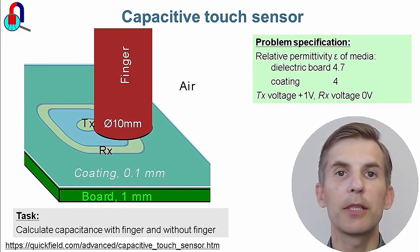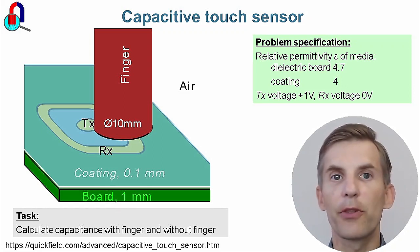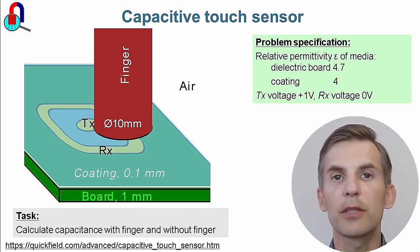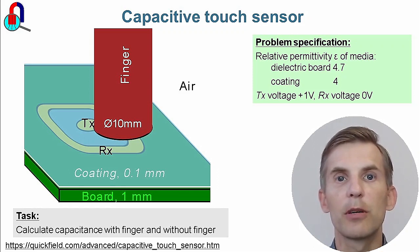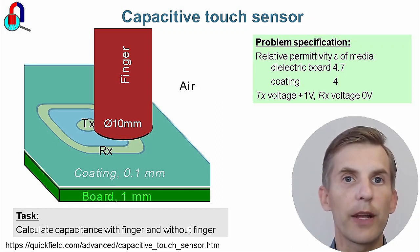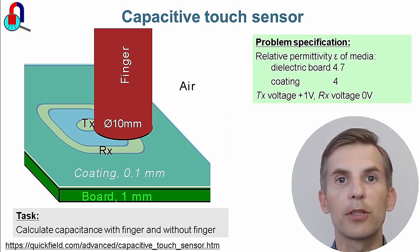A capacitive touch sensor consists of two electrodes: a transmitting and a receiving one. Electrodes are placed on a dielectric board. The presence of a human finger in the vicinity of the electrodes affects the capacitance between them. Some studies reveal that human tissue dielectric permittivity could be as much as 10,000, compared to the dielectric permittivity of air which is one. A plus one and minus one volt electric potential is applied to the electrodes, and the stored electric field energy is measured. The capacitance value is double the stored electric field energy divided by the potential difference squared.